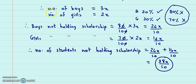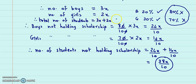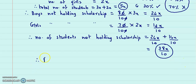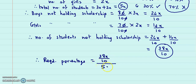But we need the percentage. The total number of students is 3x plus 2x, which is 5x. So the required percentage of students not holding scholarship will be (38x upon 10) divided by 5x, multiplied by 100. Now x cancels with x, and this becomes 38 upon 50 into 100.